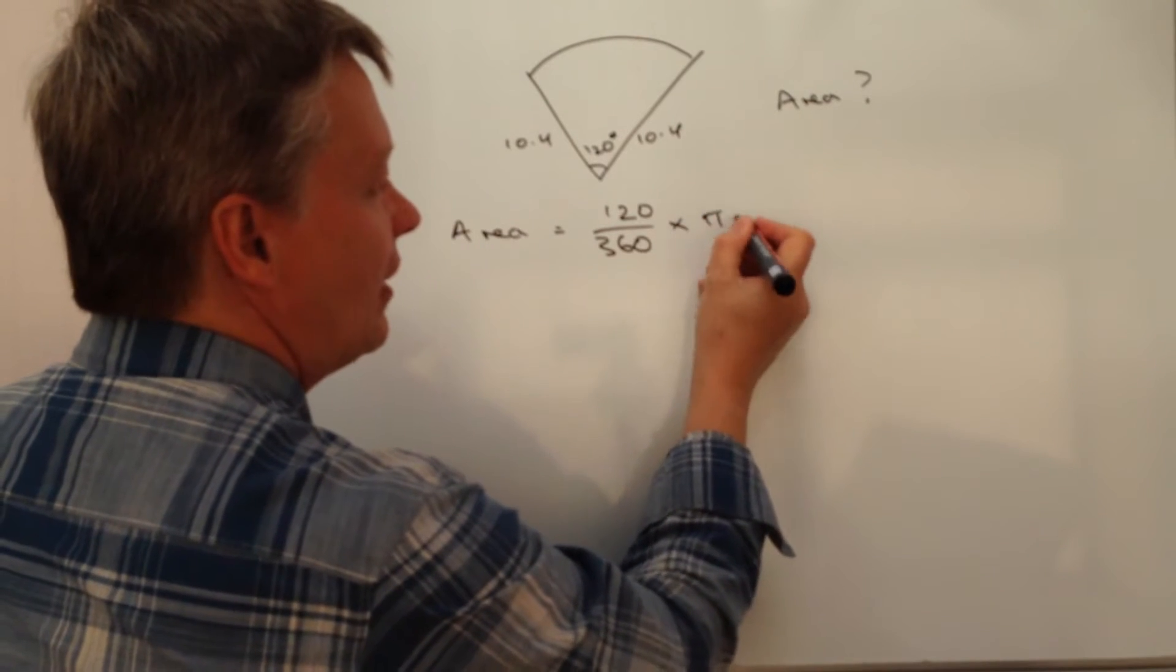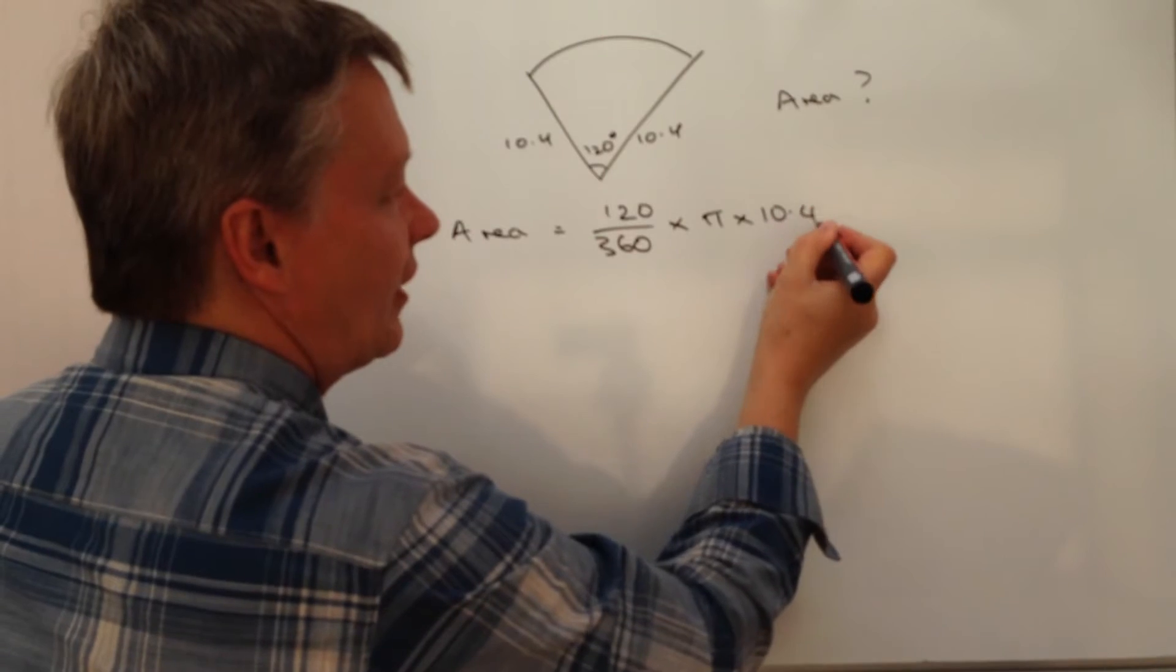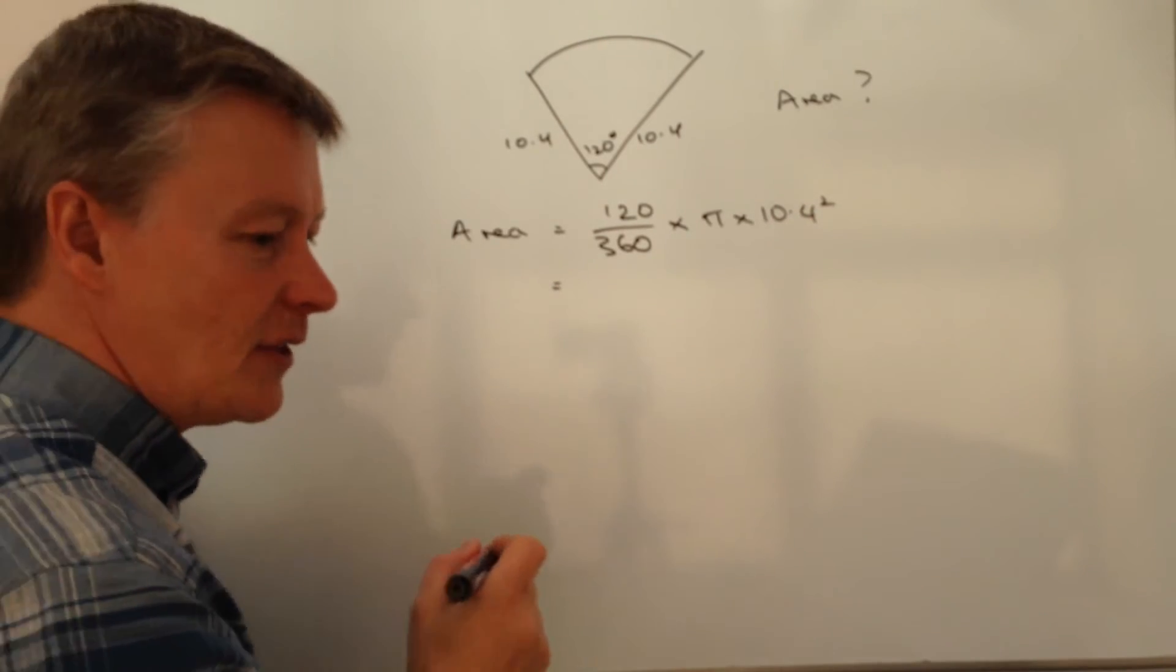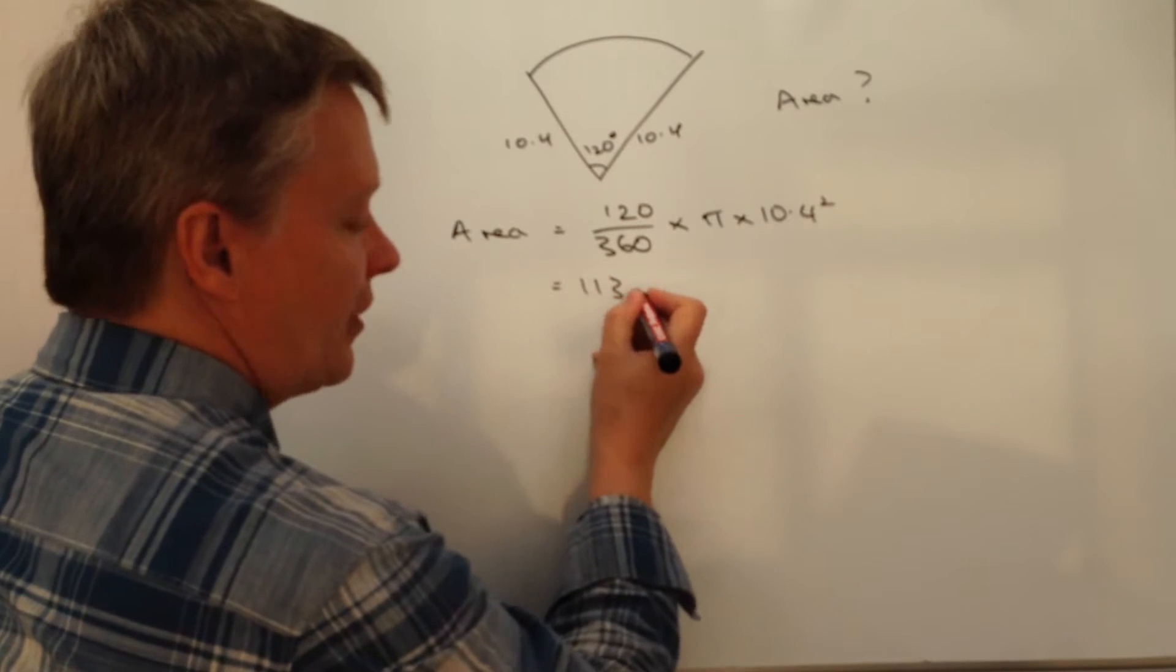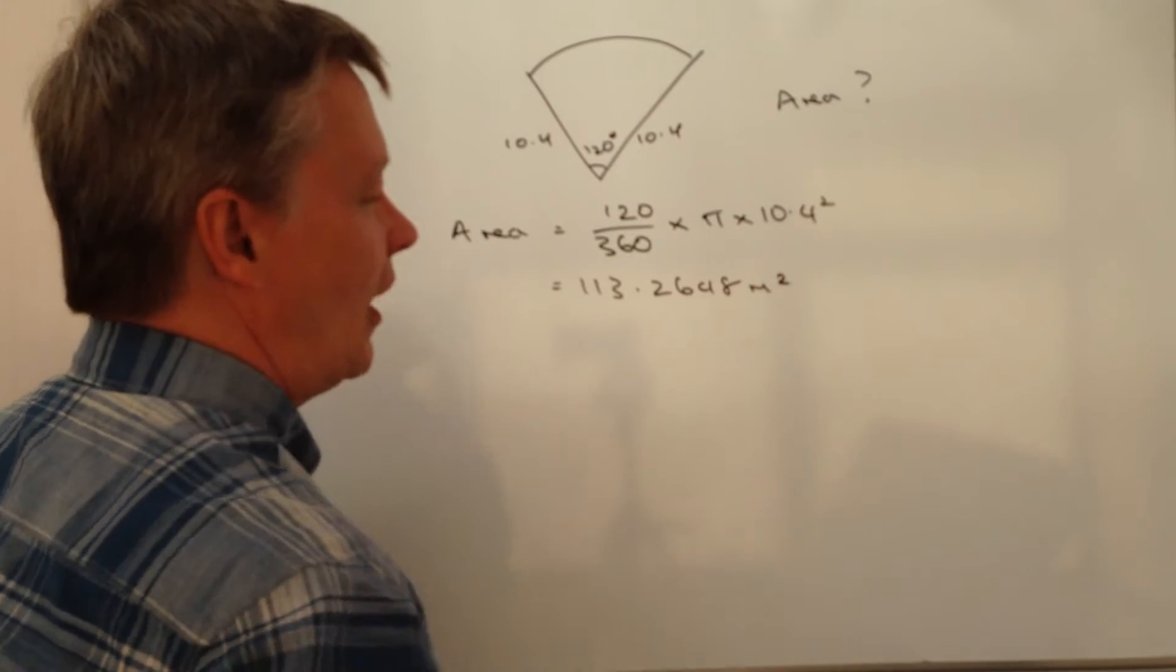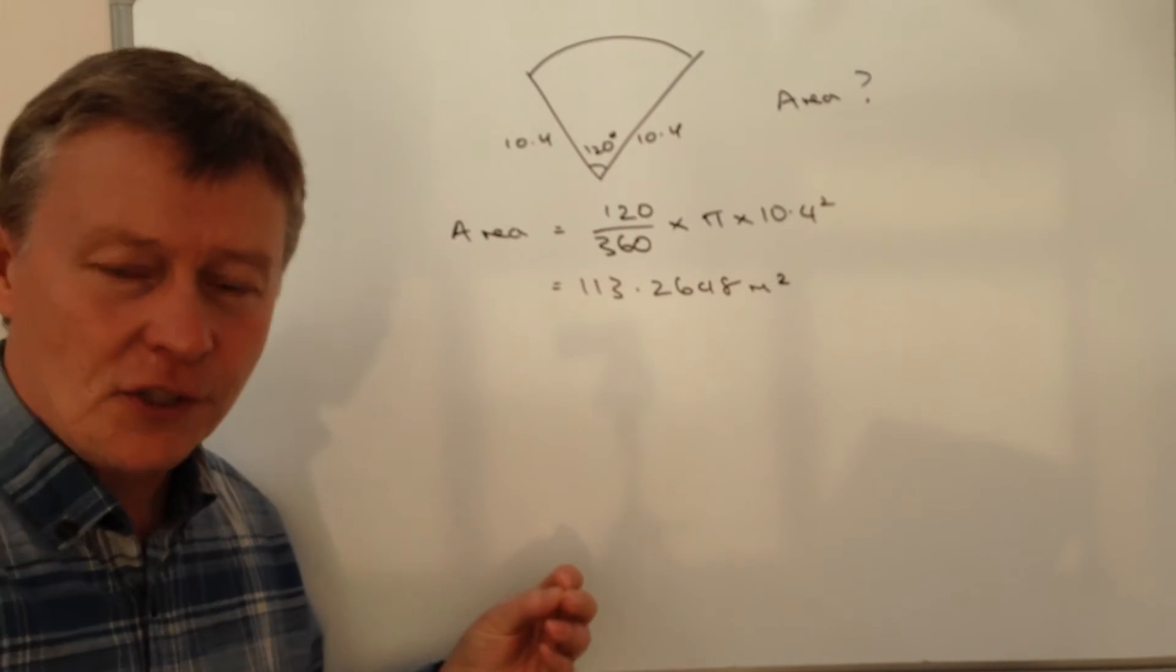So that would be pi times, in this particular case, 10.4 squared. And if you work that area out, that will give you 113.2648 metres squared. Okay, so that's fairly straightforward.